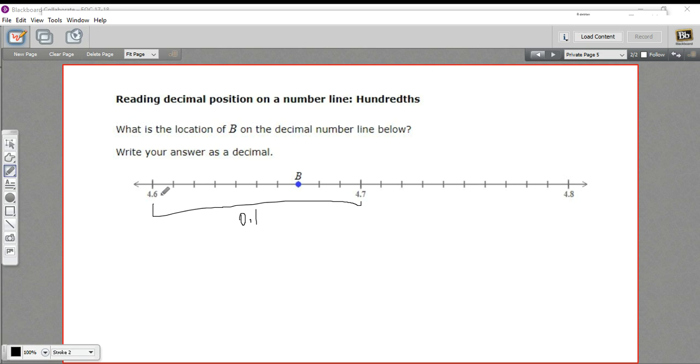So this, you can think of as 4.60. And the next hundredth up would be 4.61, and 4.62, 4.63, and so on.